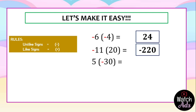For our third example: 5 multiplied by negative 30. Since 5 is positive and negative 30 is negative, they are unlike signs. The final answer is negative, and 5 multiplied by 30 is 150, so the final answer is negative 150.